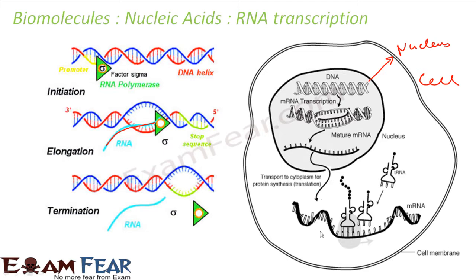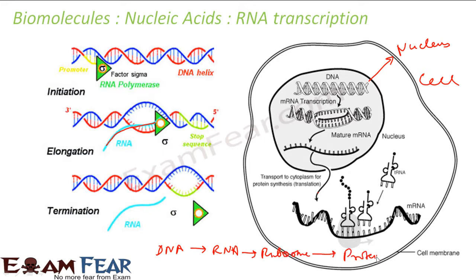This RNA is then passed to ribosomes, and these ribosomes will create protein. So the structure is: you have DNA — this is lifelong, present in each cell and very unique. DNA creates RNA, RNA goes to the ribosome, and the ribosome creates protein. Protein creates life. There are three different types of RNA we'll talk about.